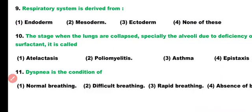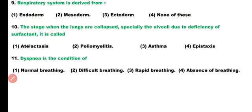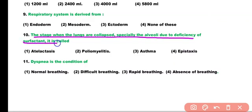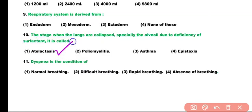Question number 10. The stage when the lungs are collapsed, especially the alveoli, due to deficiency of surfactant, is called: atelectasis, poliomyelitis, asthma, or epistaxis. Correct answer is option 1. Atelectasis is a condition of surfactant deficiency, and this stage is called atelectasis.